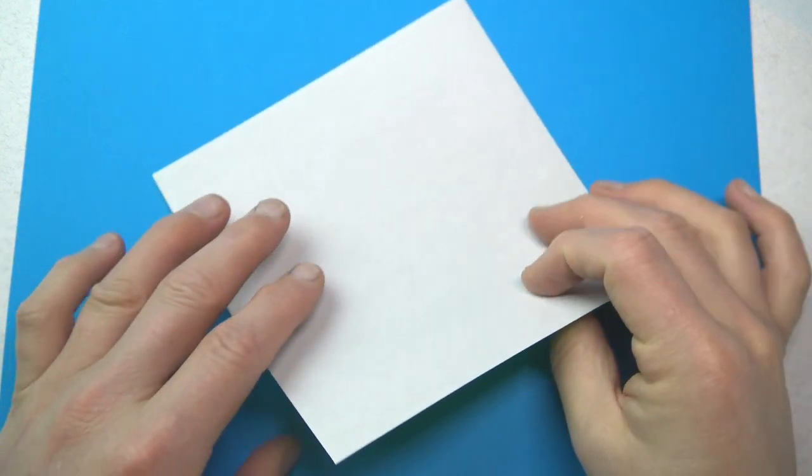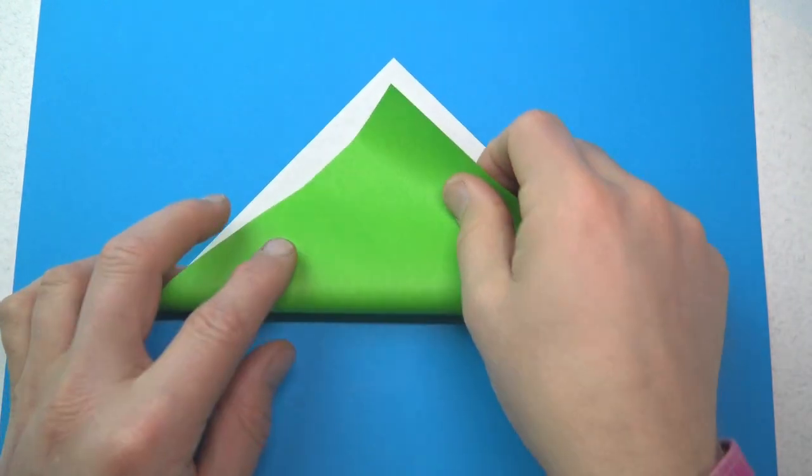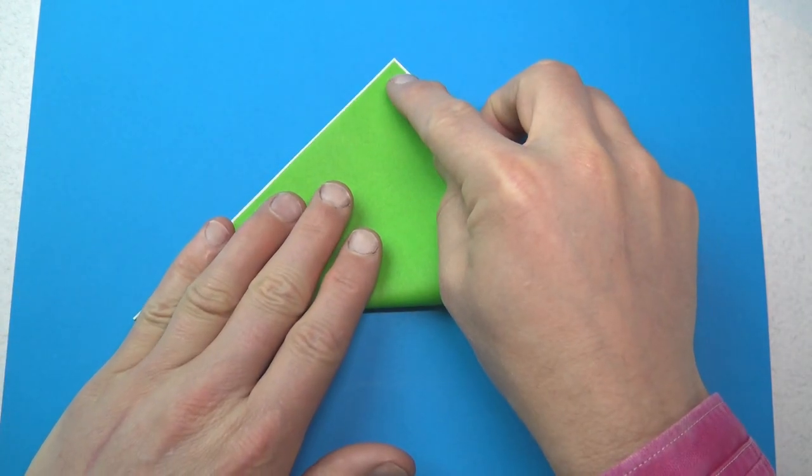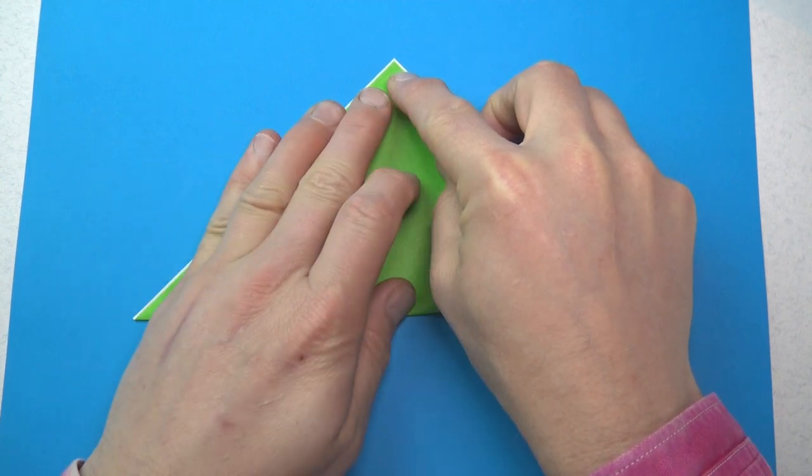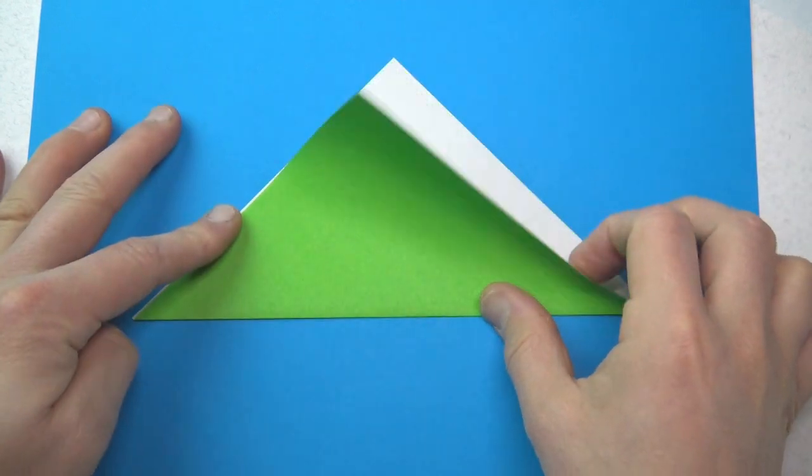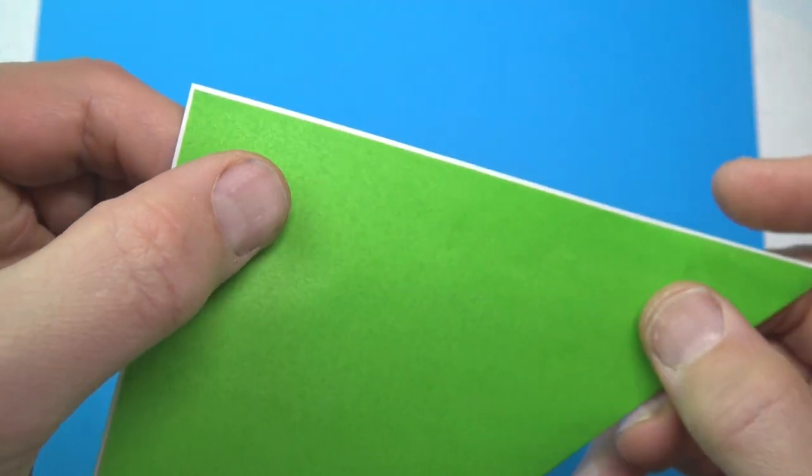To fold our first module, begin white side up. And fold in half, but we're not going to fold exactly. You want to leave a tiny border, no more than one millimeter. So, like that.